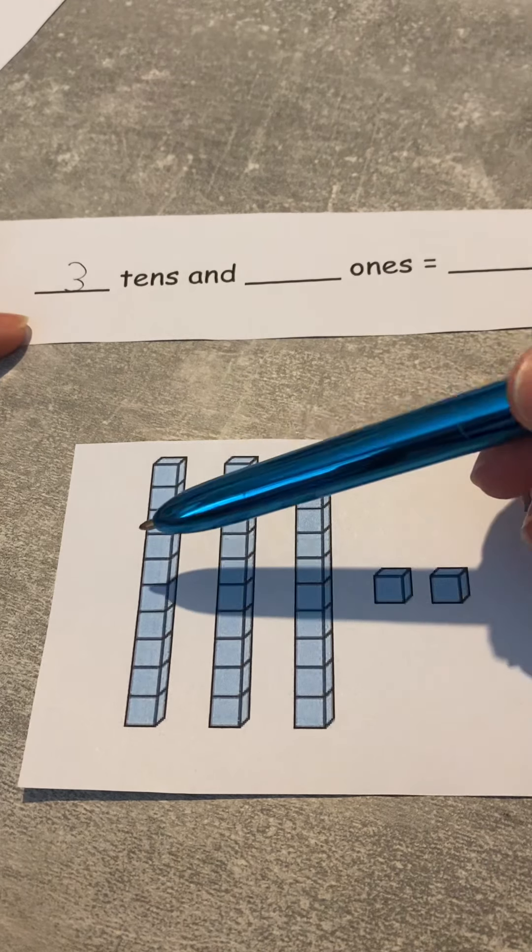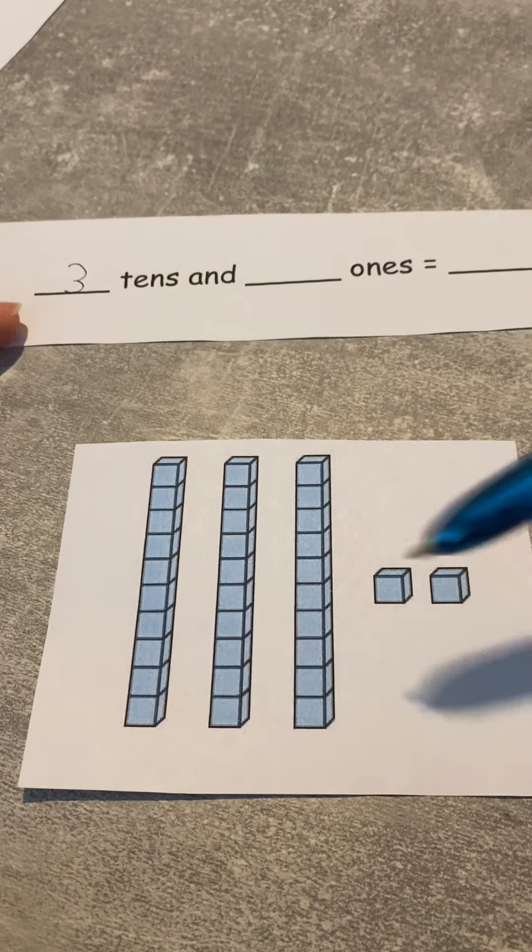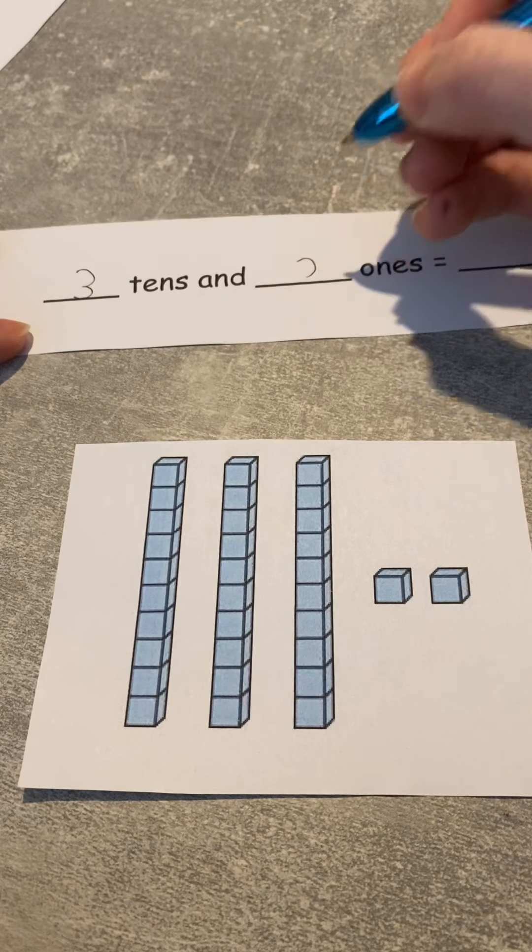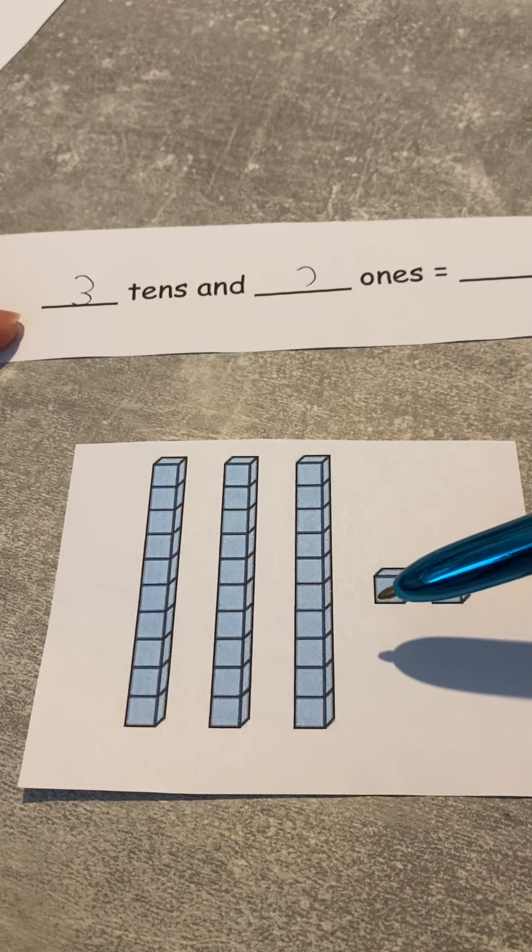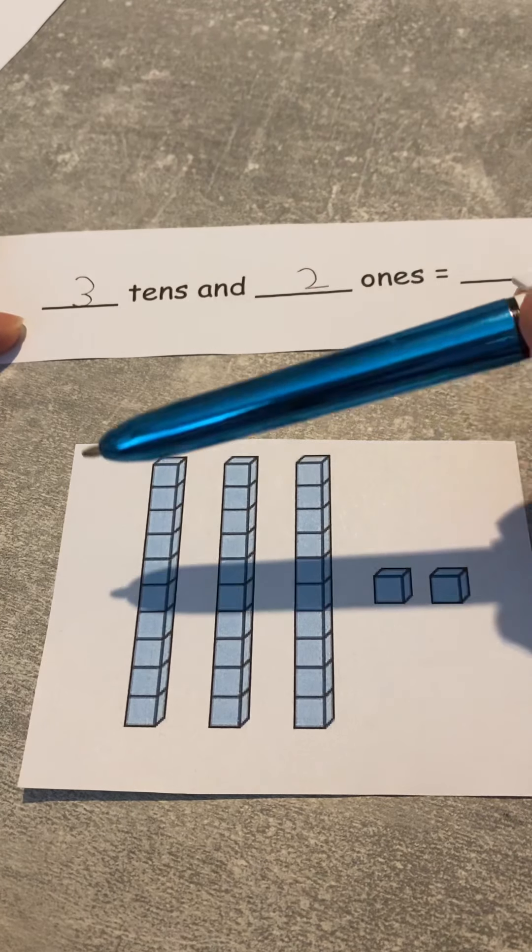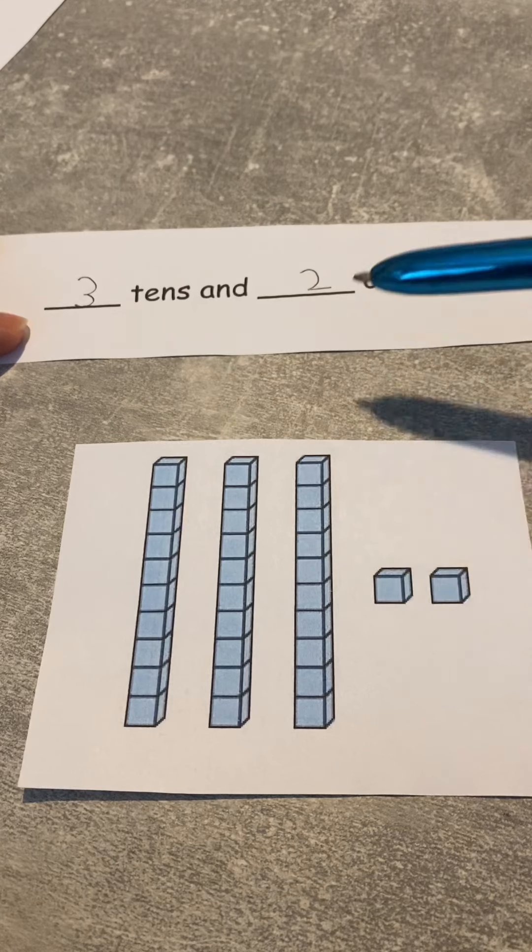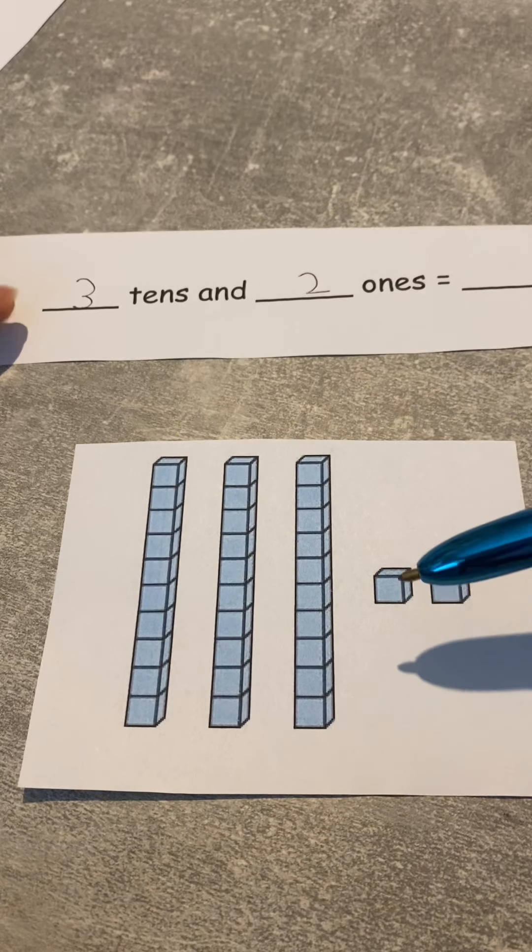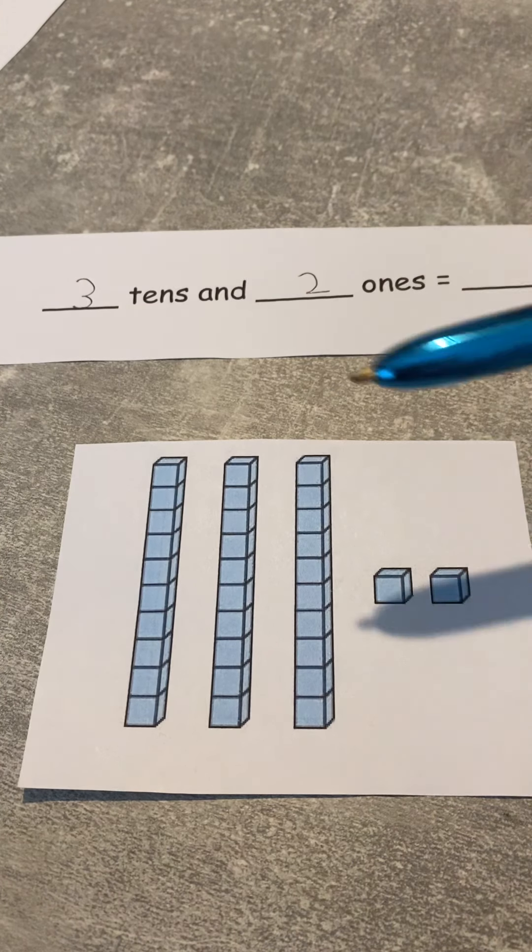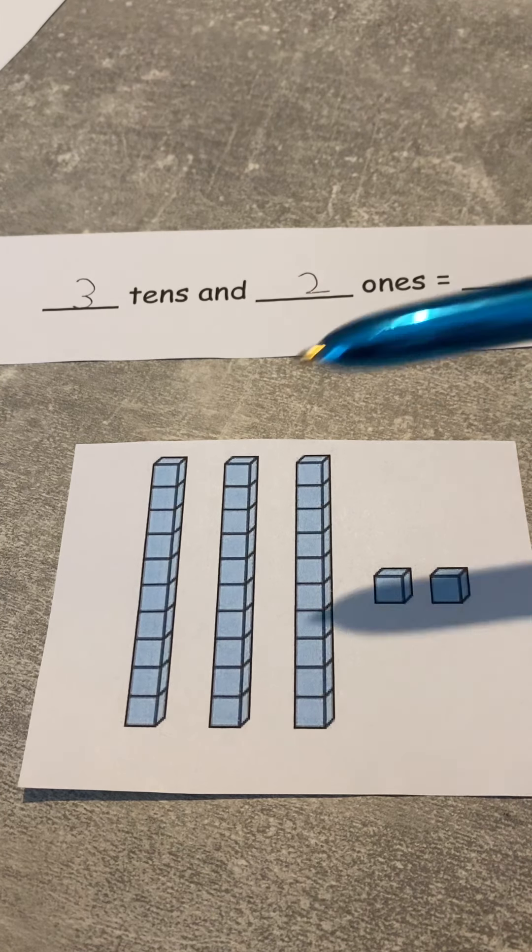And how many twos have I got? Two, brilliant! Oh, not twos, how many ones have I got? One, two. So we can check that, can't we? So which are my tens? These ones. So one, two, three. Well done!